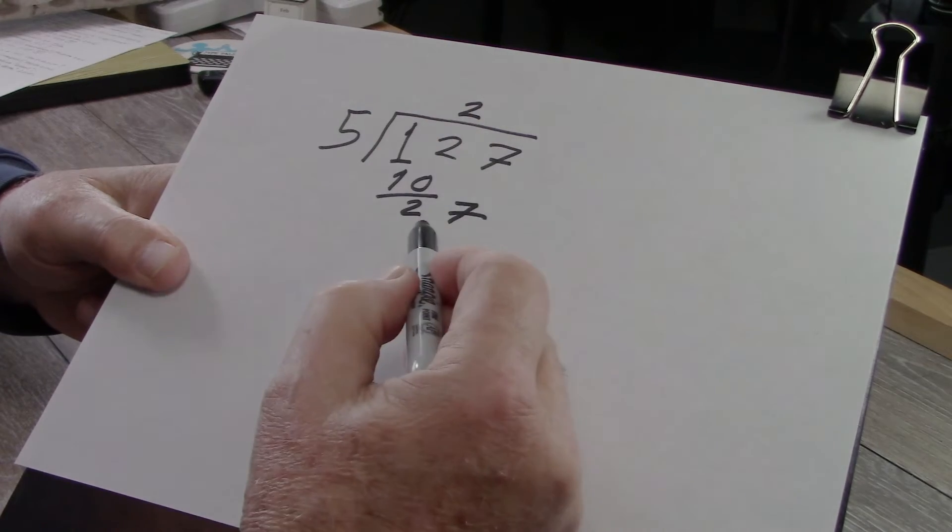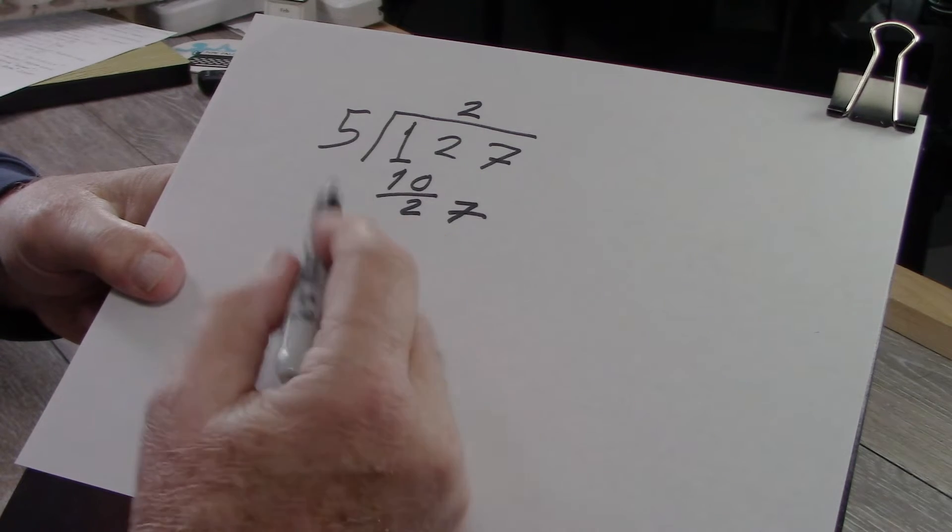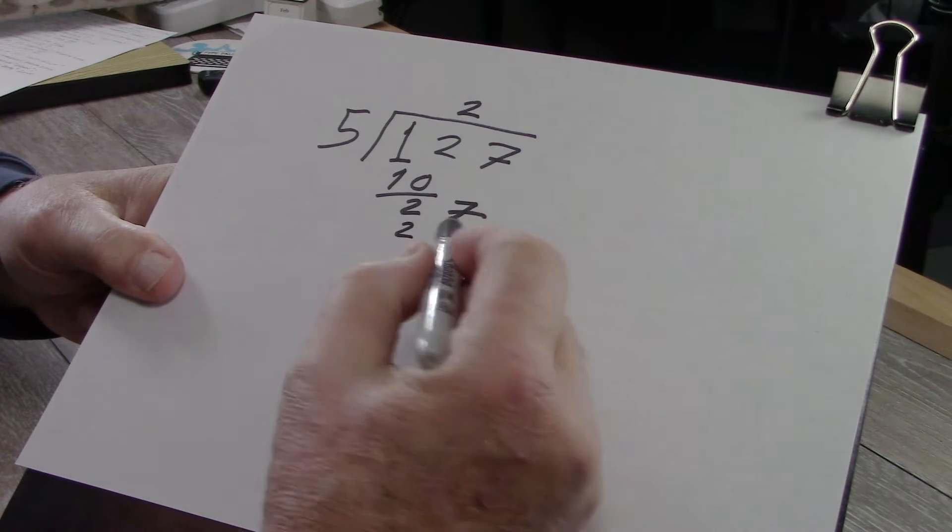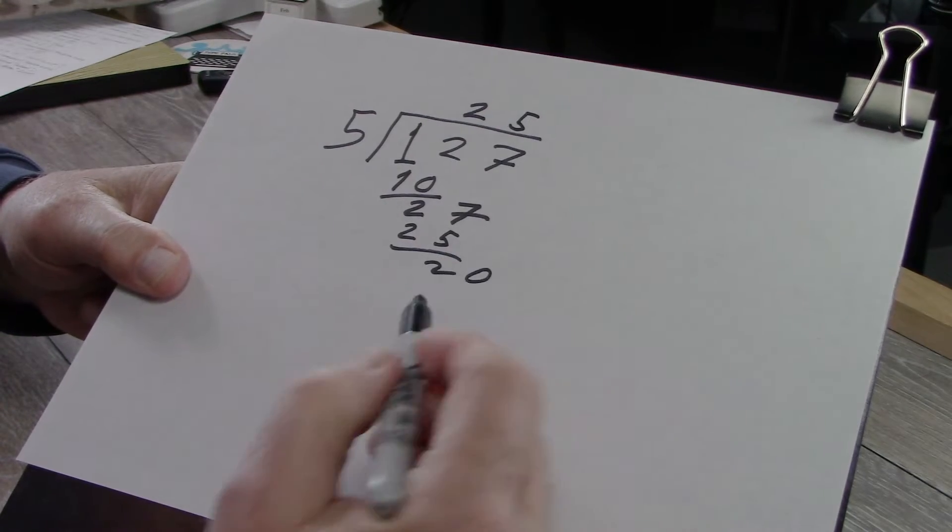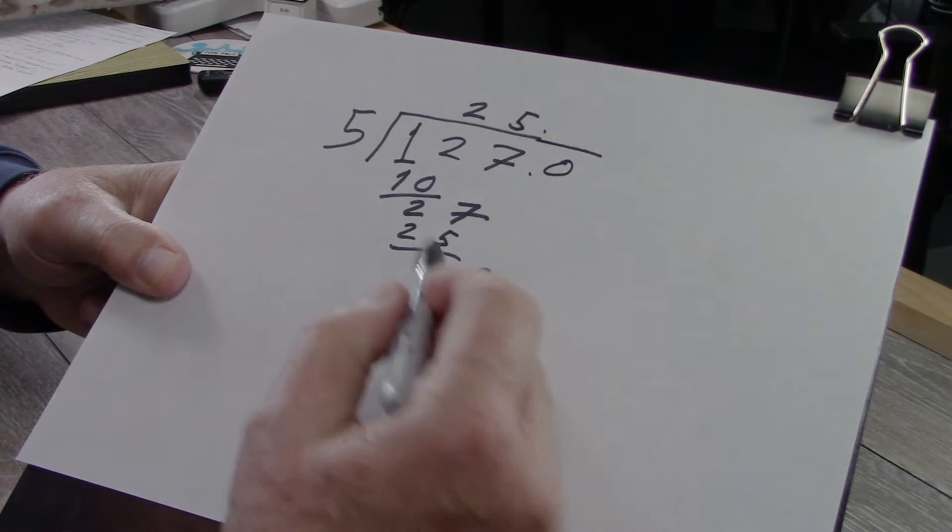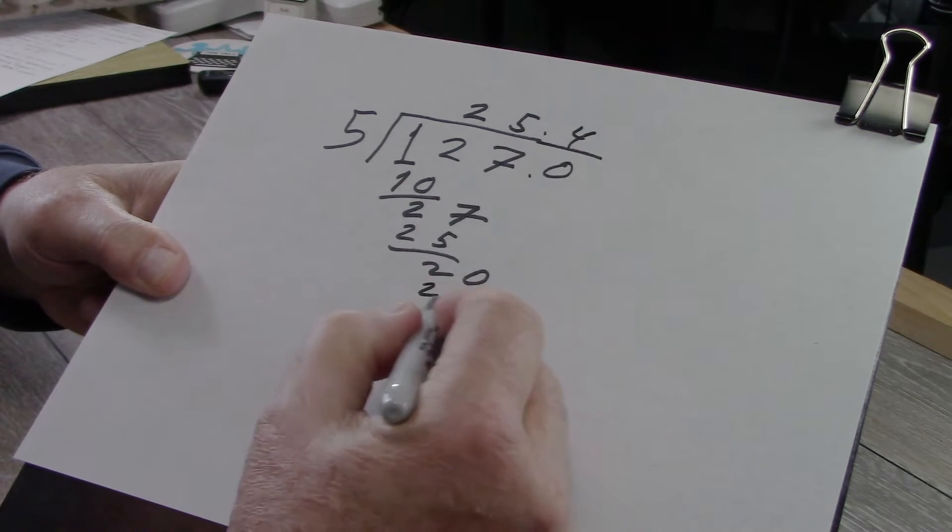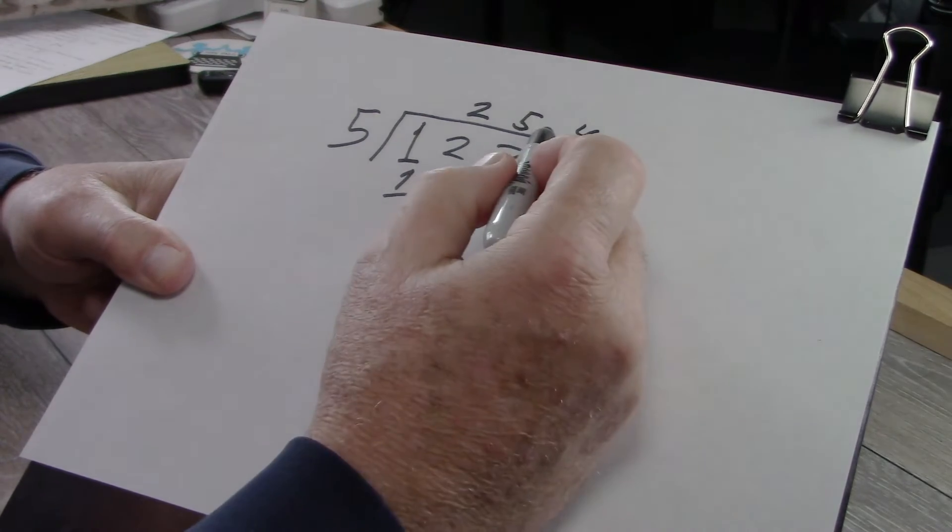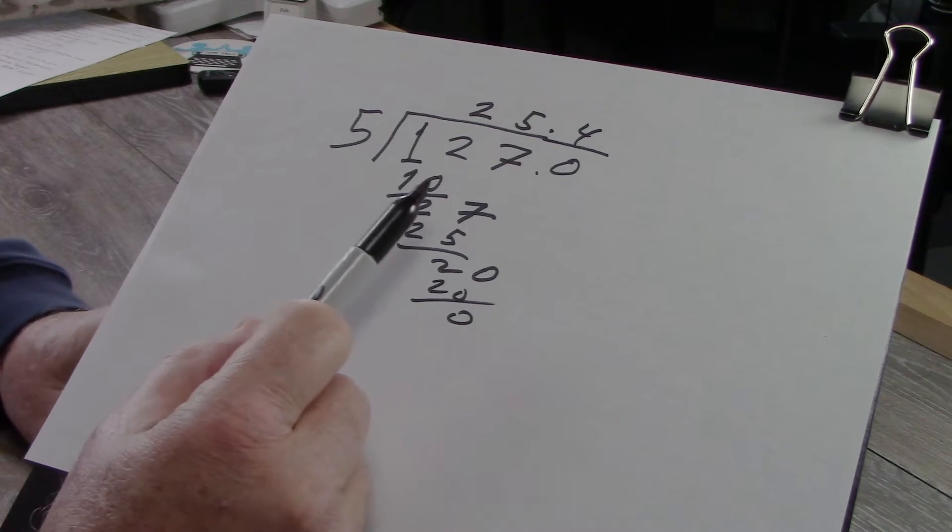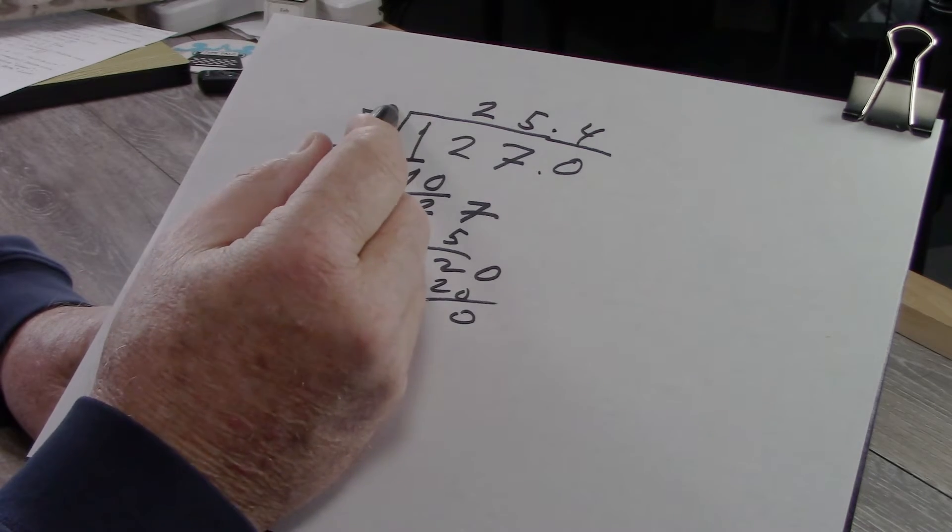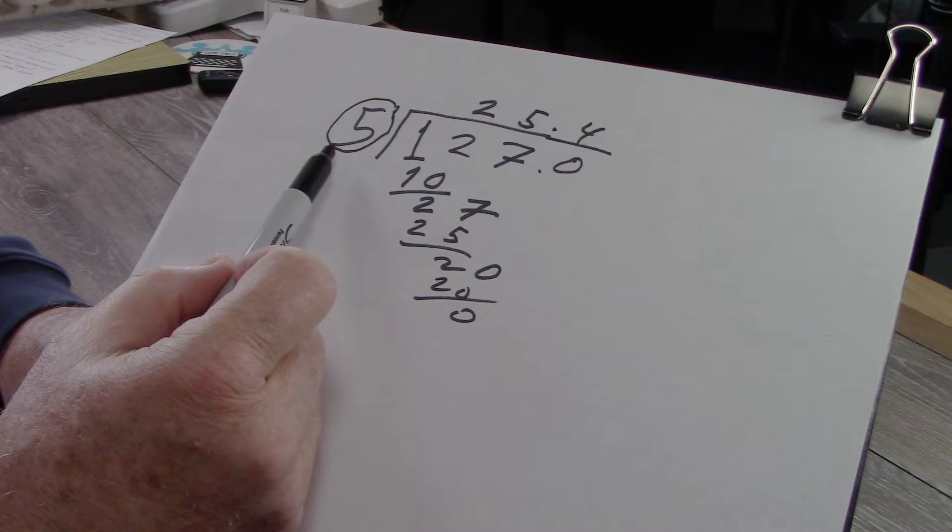And then I do the same thing. How many times will 5 go into 27? Well, because I know my multiplication tables for single digit numbers, it's pretty easy to know that it's 5 times. And there you got a remainder of 2. Bring down the 0, 5. Oh, I know that it's going to be 4 because I know my multiplication tables. And that is my quotient 25.4. But this whole technique is dependent upon me mentally knowing the multiplication tables for 5.